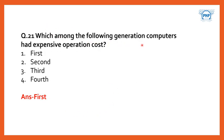Which among the following generation computers had expensive operation cost? First, second, third, or fourth generation? The answer is first generation, because technology was still developing at that time and everything was very costly, making operation costs very high.